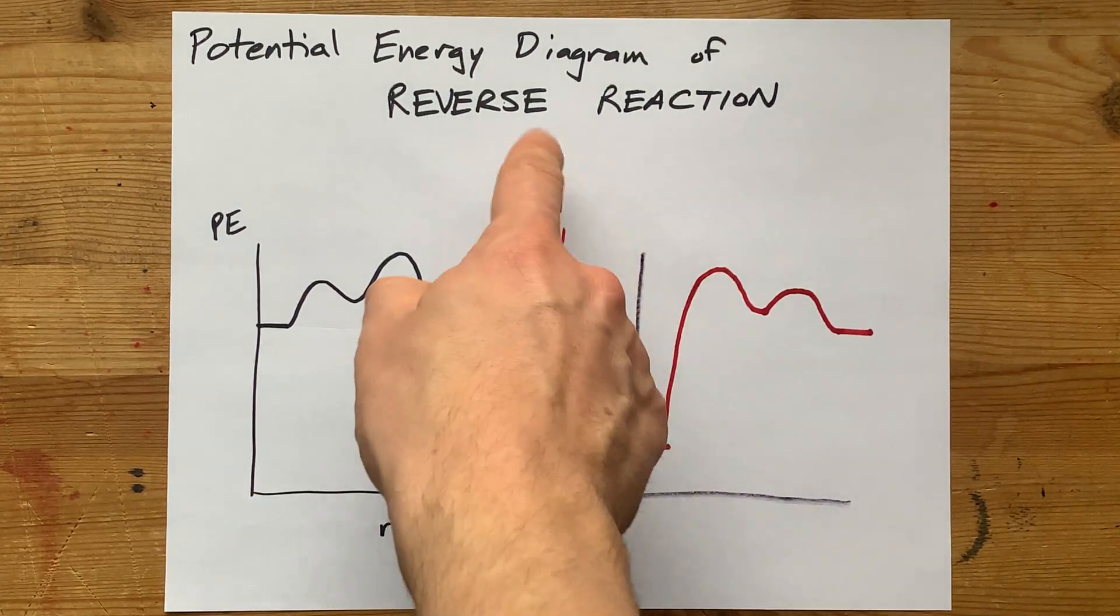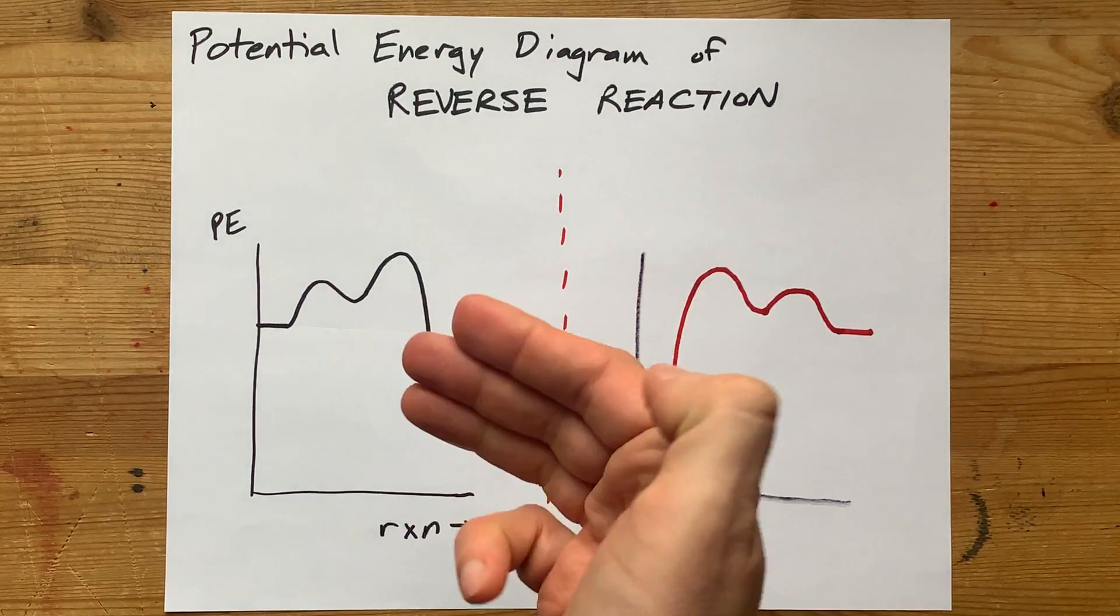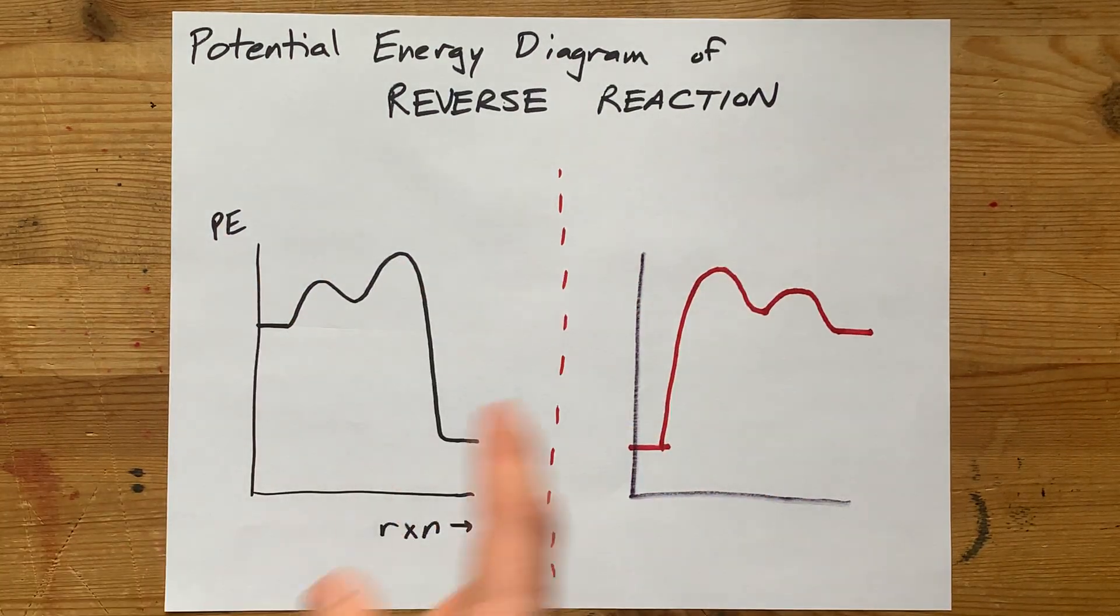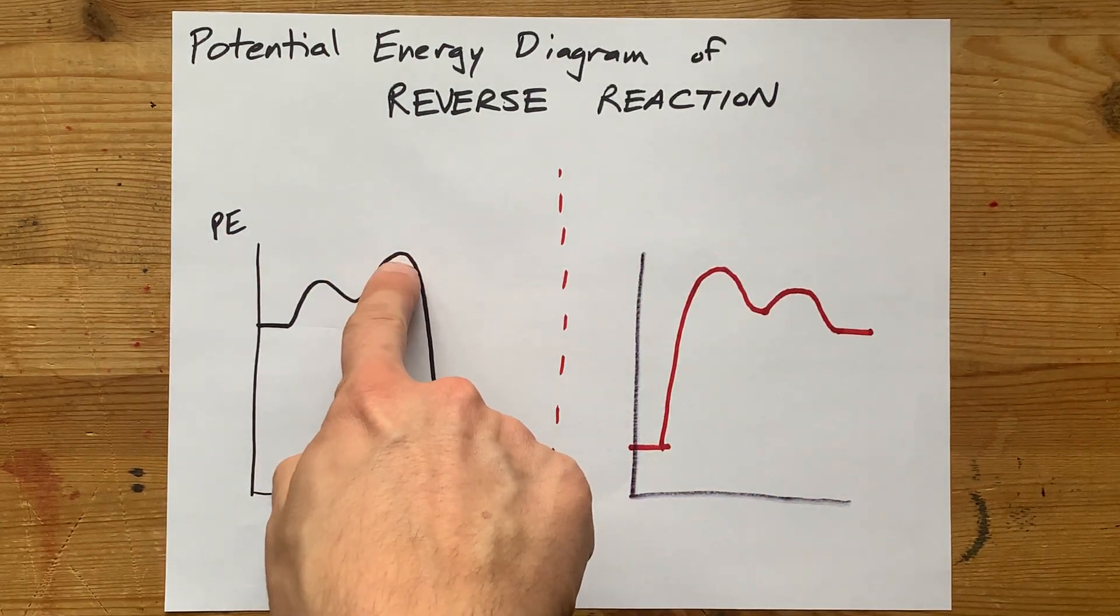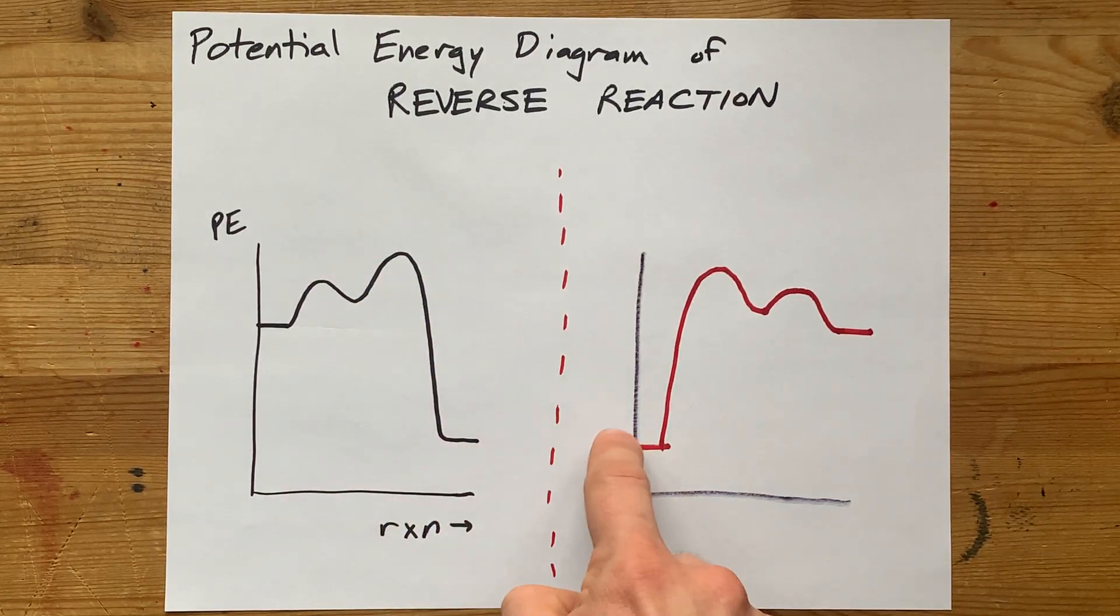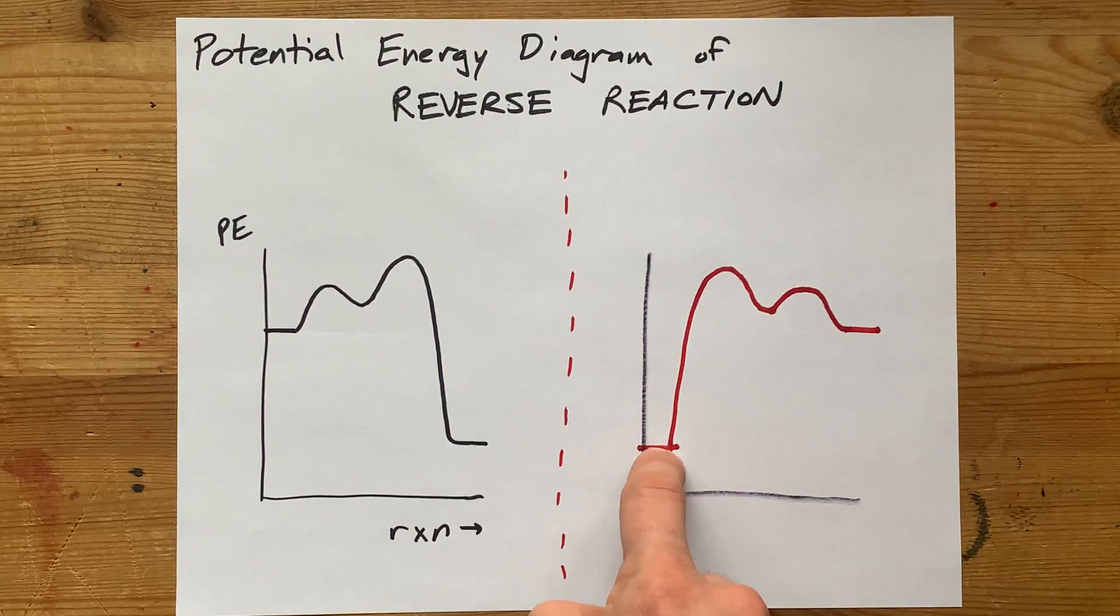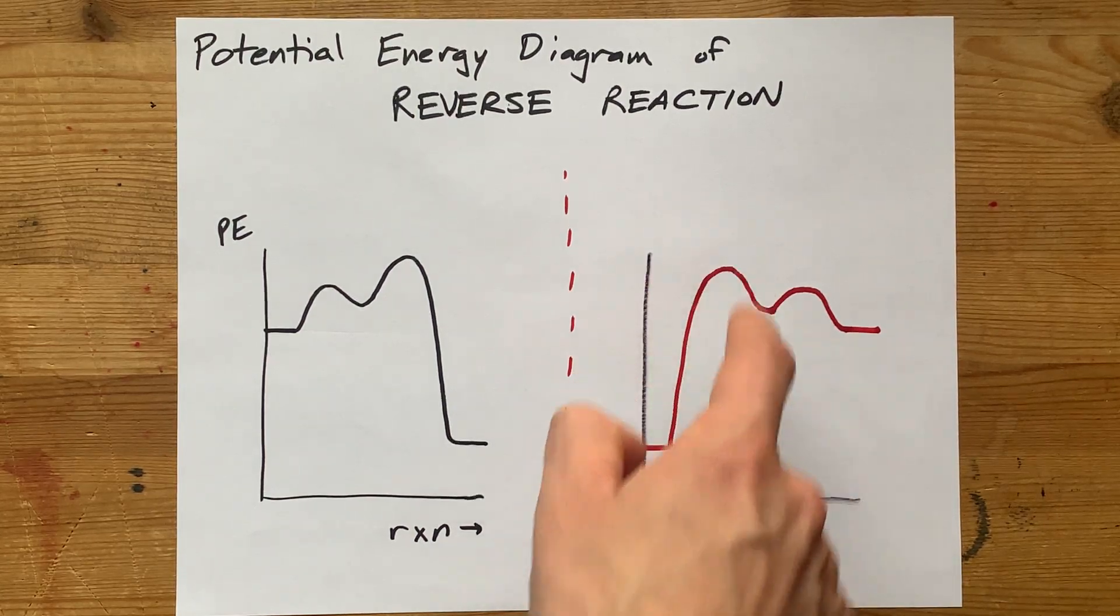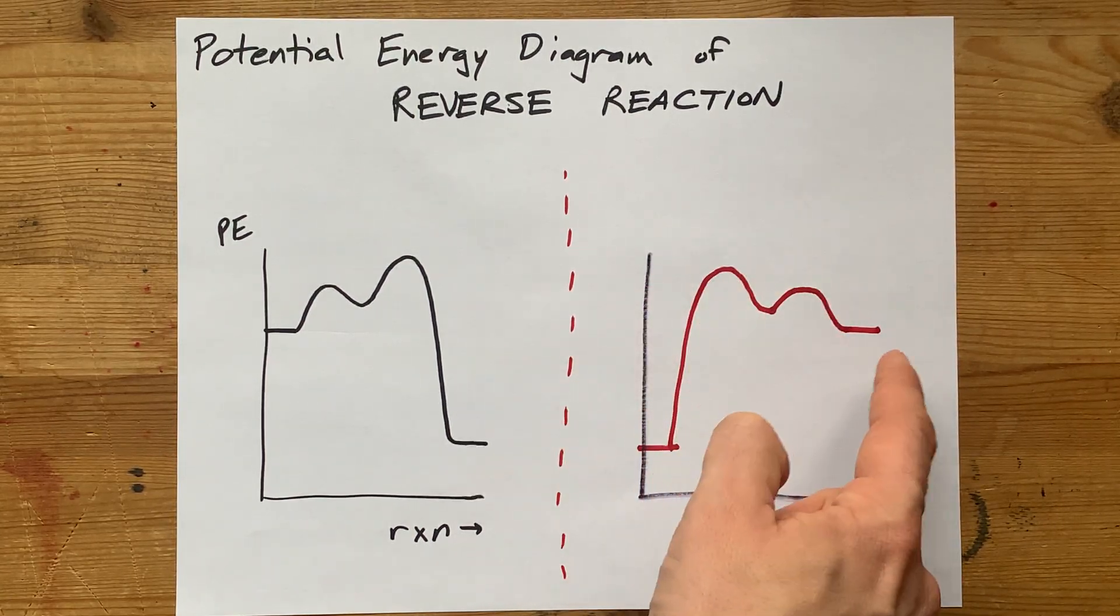And in order for it to be the reverse reaction, you've actually got to do the same steps, but in reverse. So however much energy was released to get from your transition state to your products here is now the activation energy from your now reactants up to its transition state, etc.